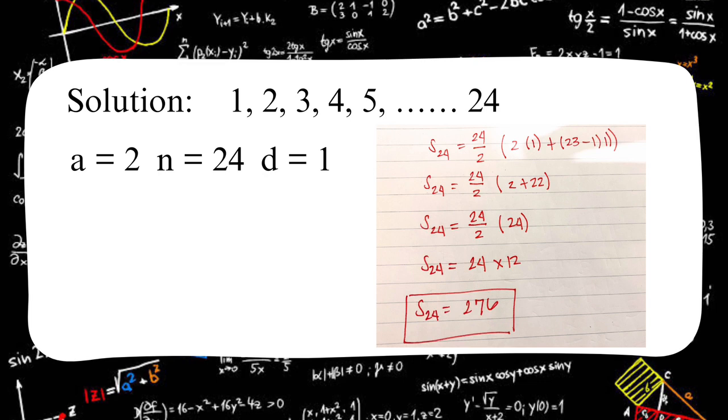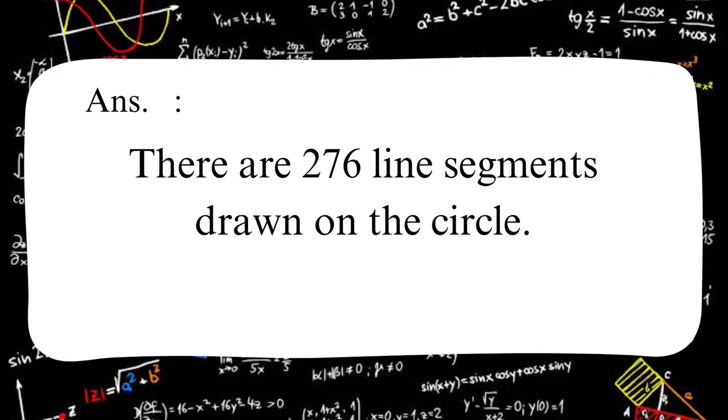Then we have S sub 24 times 12. The number 12 came from 24 divided by 2. And now, we will be getting the answer, which is S sub 24 is equal to 276. And the answer is 276. There are 276 line segments drawn on the circle.